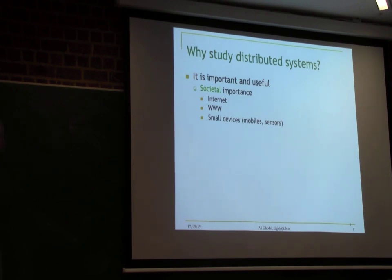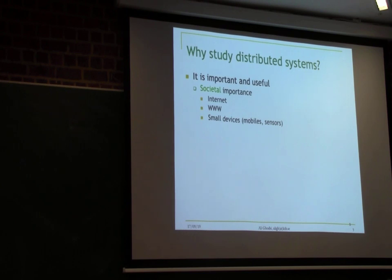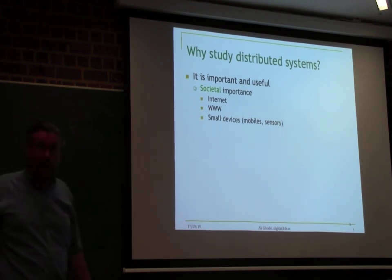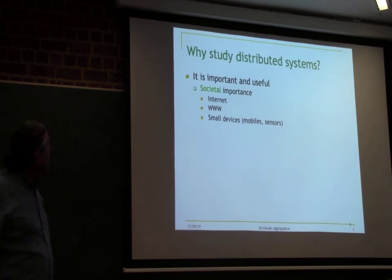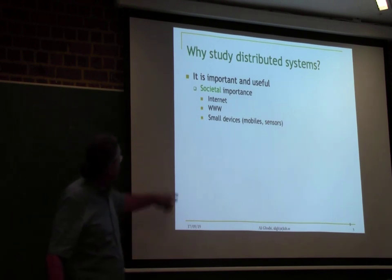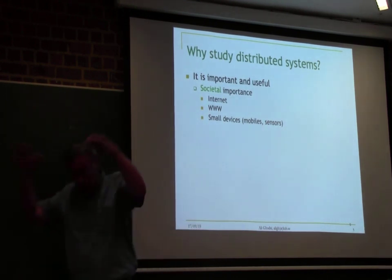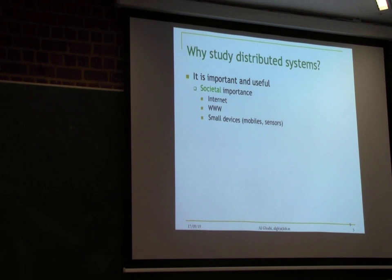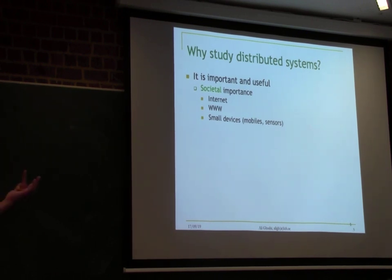So why are distributed systems important? It's kind of obvious. The Internet is a very large distributed system. On top of the IP communication, there's the World Wide Web, which is also a distributed system. Many small devices are connected together — mobile phones, for example — they all make distributed systems. And this project is also going to be distributed. Distributed systems are everywhere, and it's getting more and more.